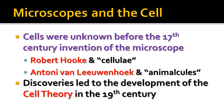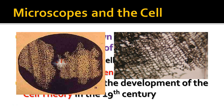The first person to report seeing cells under a microscope was a man named Robert Hooke, an English scientist who had one of the first microscopes. When he looked at a thin slice of cork cells, this is an actual copy of his drawing that he made of cork — a thin layer of cork that he looked at under the microscope.